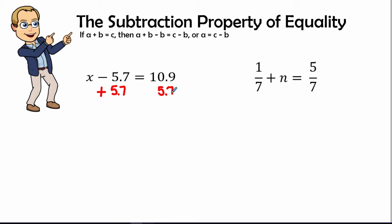Now we have negative 5.7 plus 5.7, and these are inverses of each other, so that equals 0.